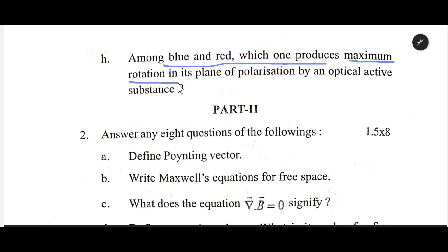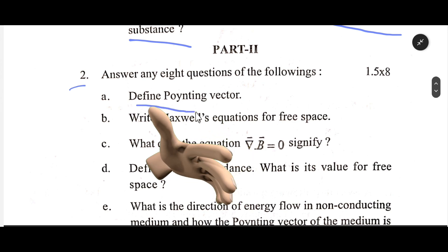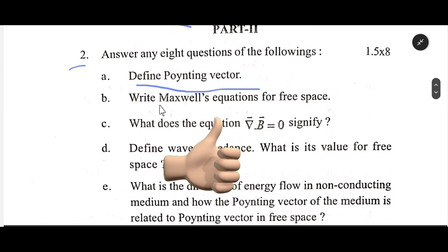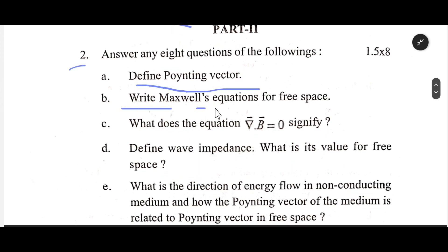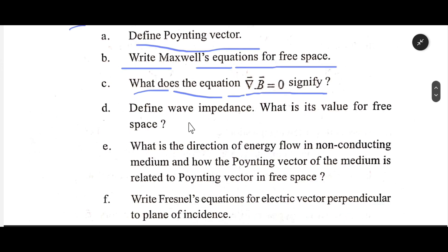Number two: Define the Poynting vector. Write Maxwell's equations for free space. What does the equation ∇·B = 0 signify? Define wave impedance and what is its value for free space?